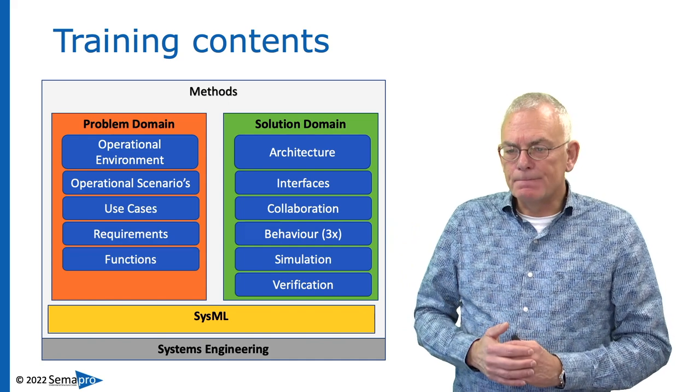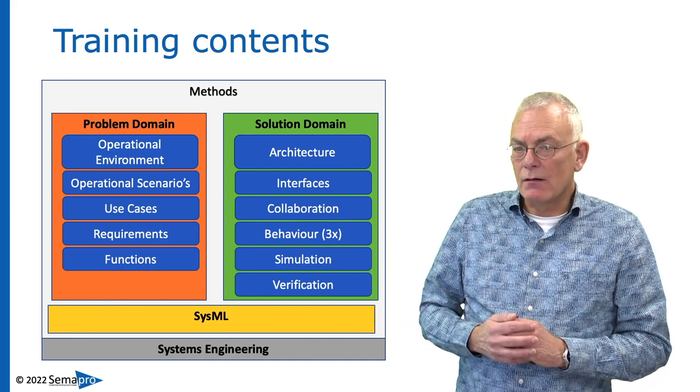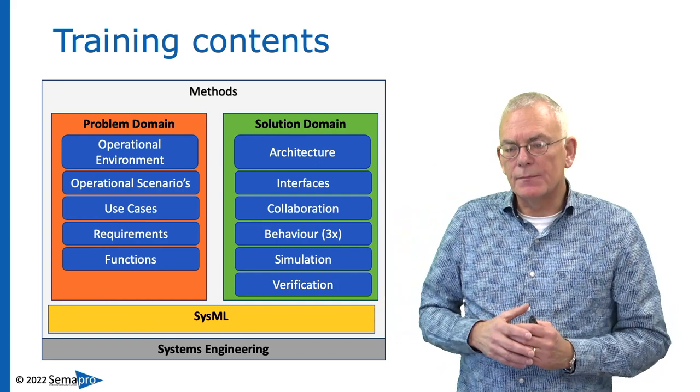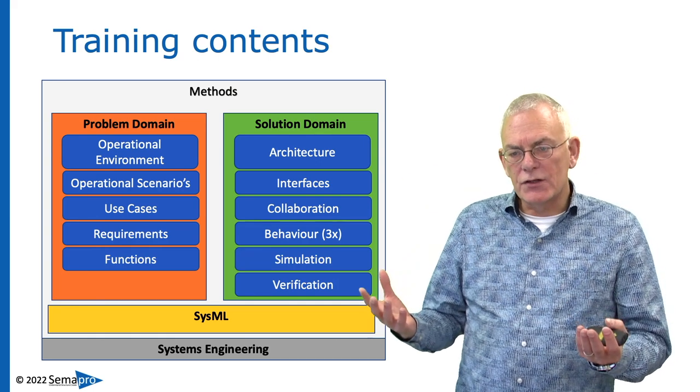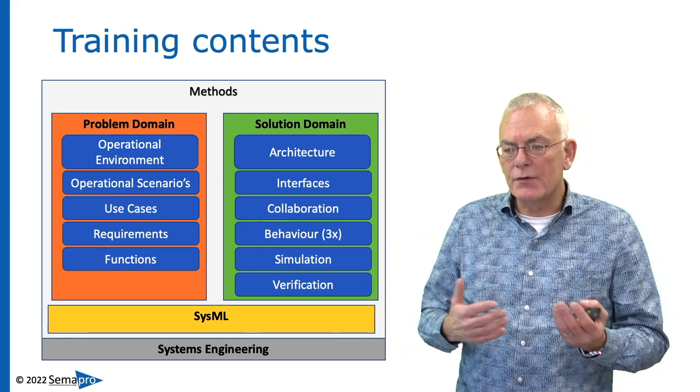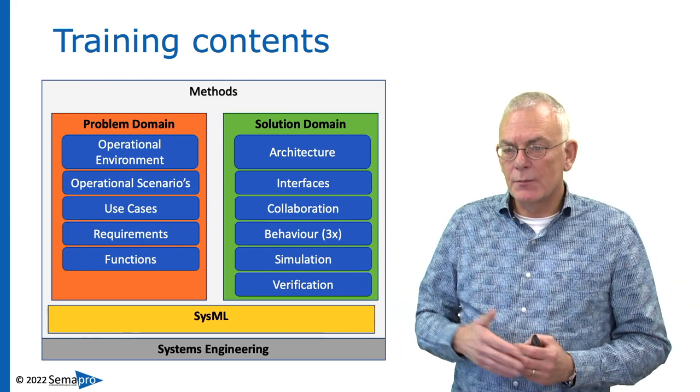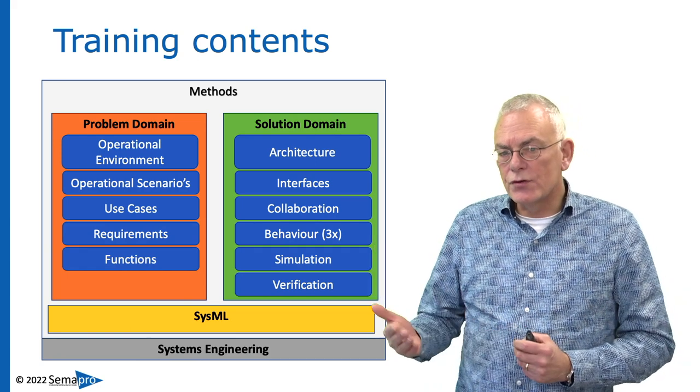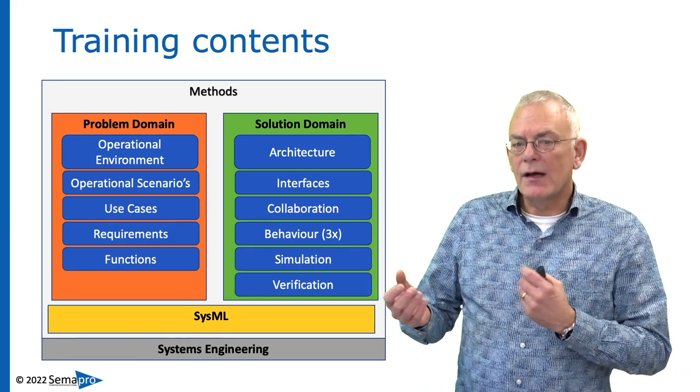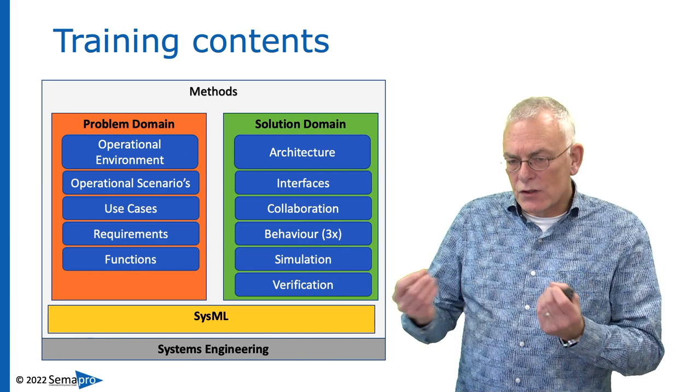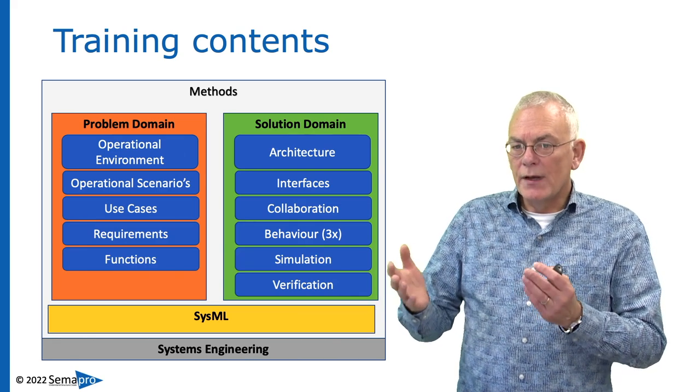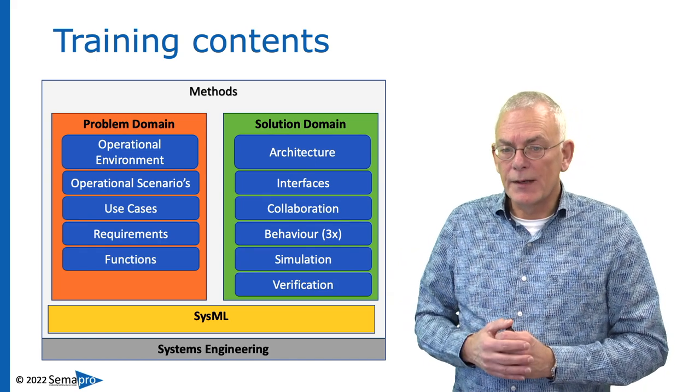In the solution domain, that's basically about our design, we're going to talk about the composition of our system. So, what are the system elements and what are the interconnections? And these interconnections will represent, of course, interfaces. But it doesn't stop there. Because once you have identified interfaces, you also need to say something about how do these system elements cooperate or collaborate basically to solve the problem that you defined before in the problem domain.